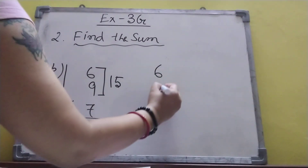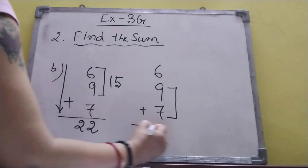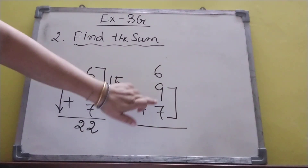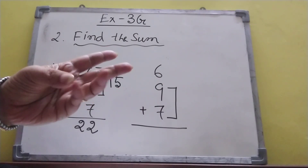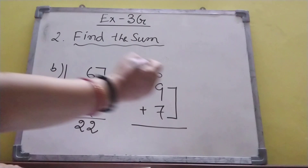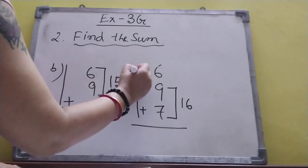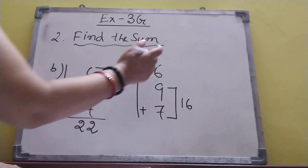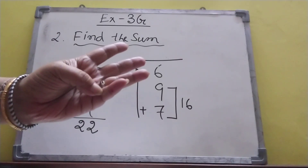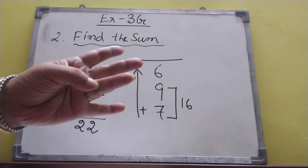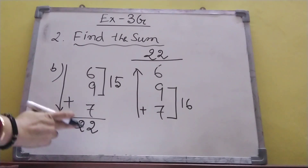Now six, nine, seven plus — if we add this part first: nine plus seven: nine, ten, eleven, twelve, thirteen, fourteen, fifteen, sixteen. Then plus six — we are going upward direction, so answer we will write here. Sixteen after sixteen, six is here: sixteen, seventeen, eighteen, nineteen, twenty, twenty-one, twenty-two. Answer is same — twenty-two.